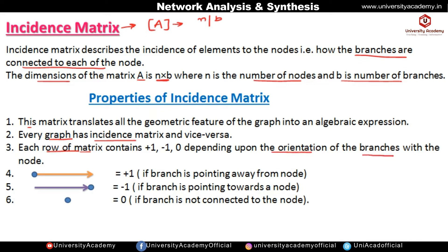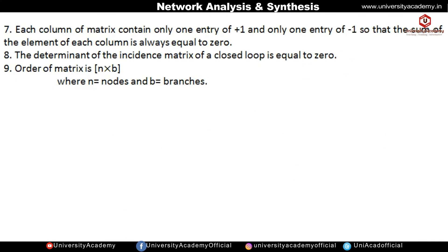For example, consider a node. If the branch arrow is pointing away from the node, we write plus one. If the arrow is pointing toward the node, minus one will come. If the branch is not connected to that node, zero will be written. The next property is that each column of the matrix contains only one entry of plus one and only one entry of minus one, meaning the sum of each column entry will be zero.